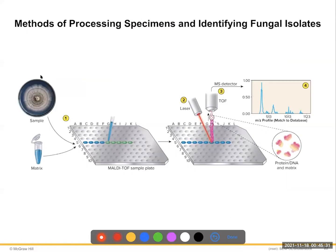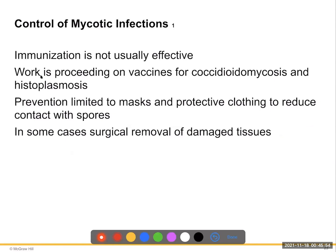A sample plate isolates different fungal infections — different wells contain different media; you inoculate each well, expose it to a laser or detector, and can identify which type of fungal species is present in the infection. Immunization is generally not effective with fungal infections, though some workers present vaccines for coccidioidal mycoses and histoplasmosis.